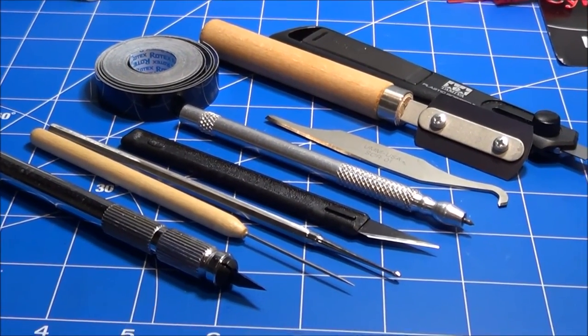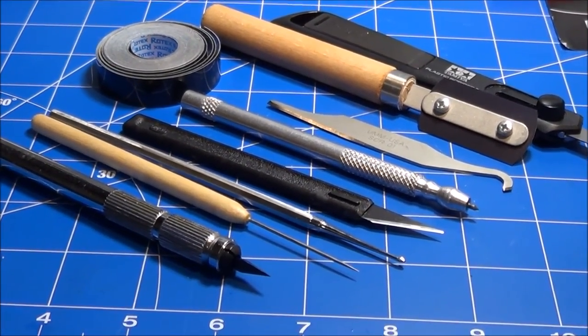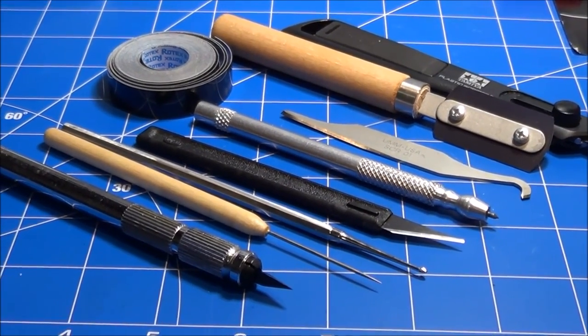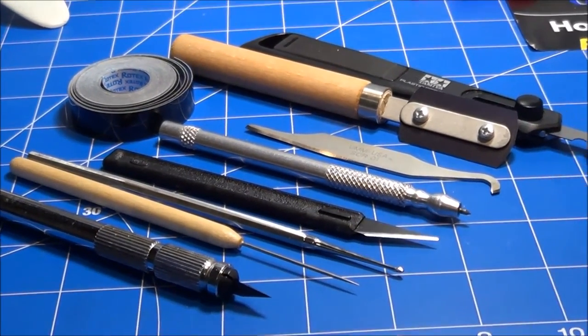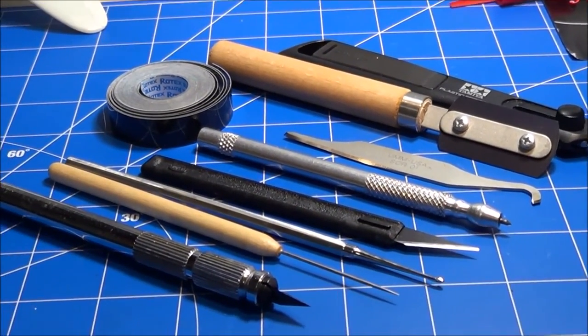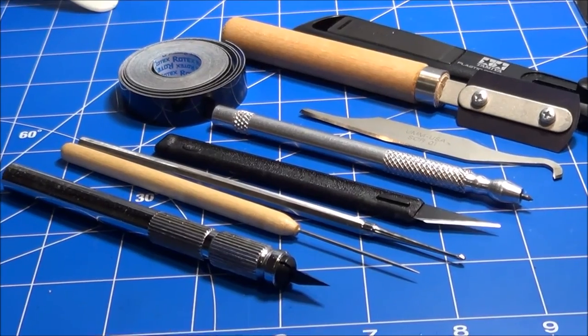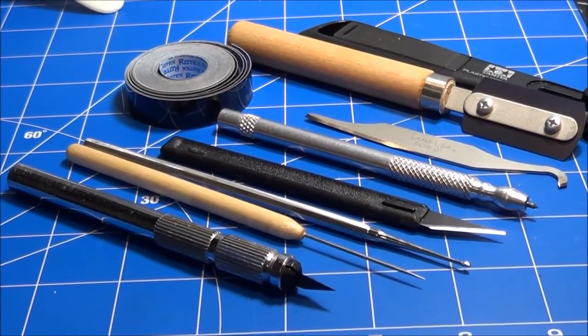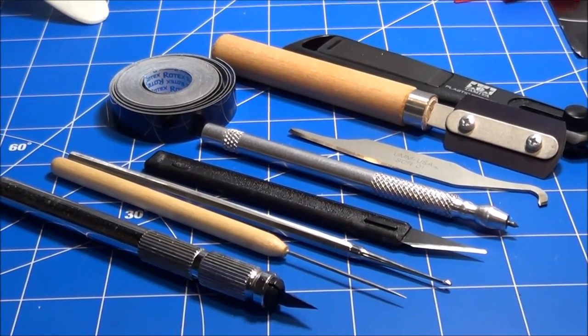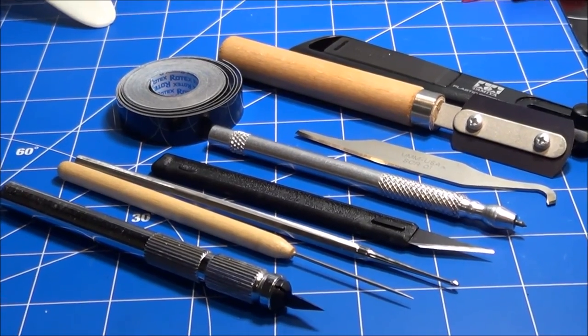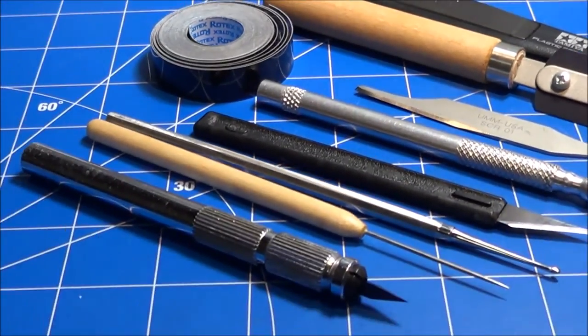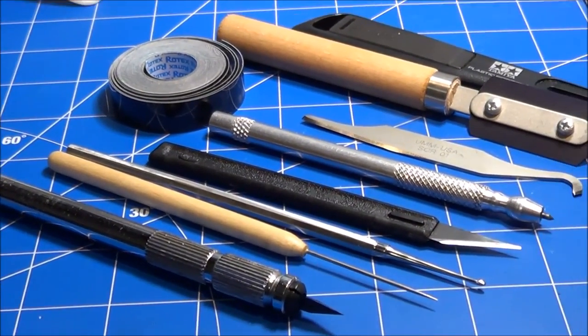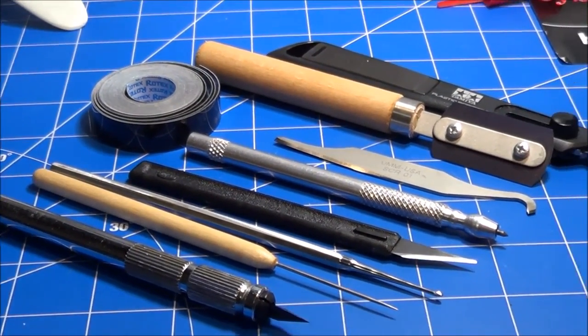So that was just an example of the few scribing tool options that are out there for you. Look around and see who has what to offer. Most of your major model companies do produce their own scribing tool like Tamiya, Trumpeter, and Testors. I do highly recommend the UMM USA tool, which is this one here in the middle, along with anything of your choice. Even a simple needle will do the job for you if you want.